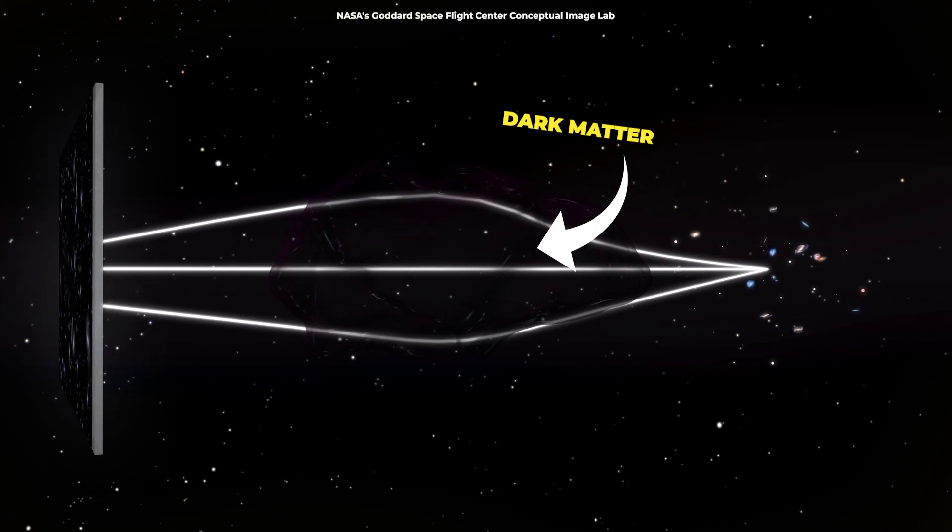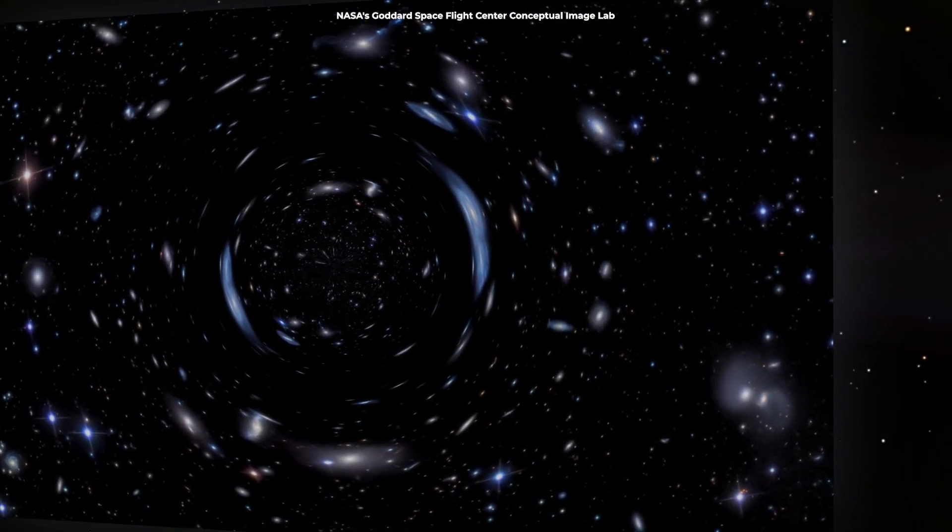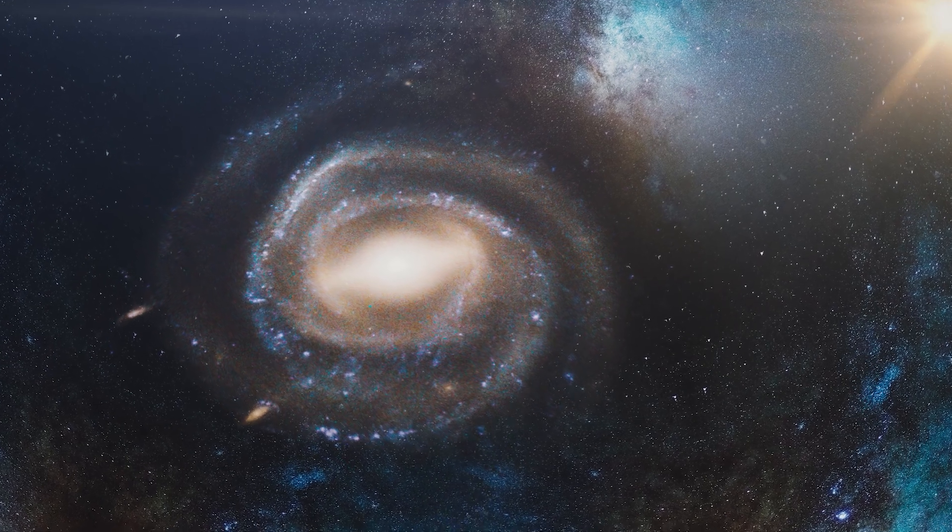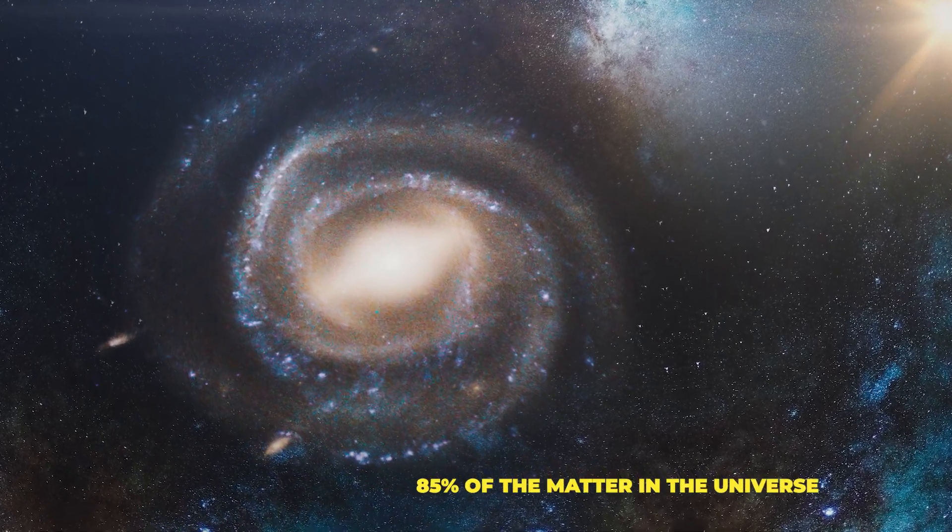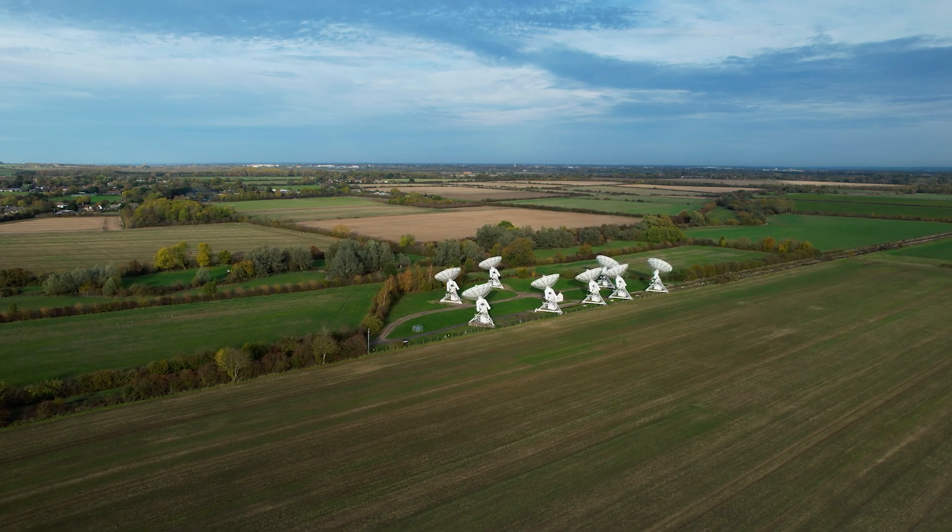We know that dark matter is invisible. It doesn't emit or absorb light, but we can see its effects through gravity. It's the hidden force holding galaxies together, accounting for about 85% of the matter in the universe. But no one has ever directly observed dark matter.